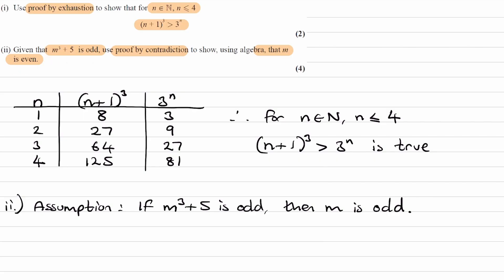It's one or the other. If m cubed plus 5 is odd, you have two options. m is either even, or m is odd. So if we disprove that m is odd, then that means that m must be even. And that's the basis for proof by contradiction. You disprove the opposite scenario, and therefore the original scenario must be true.